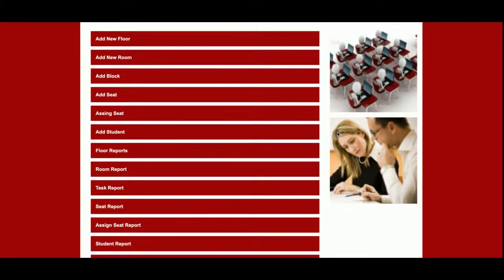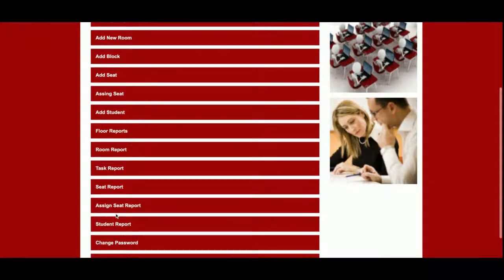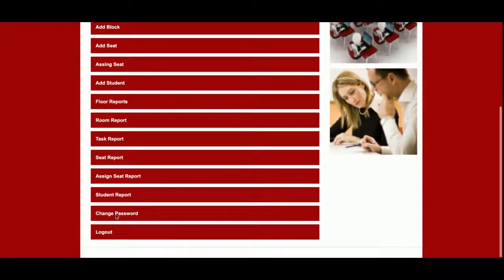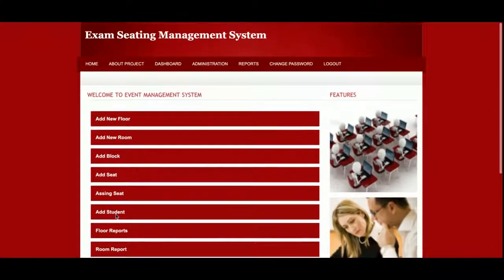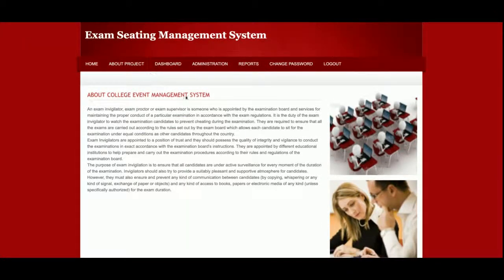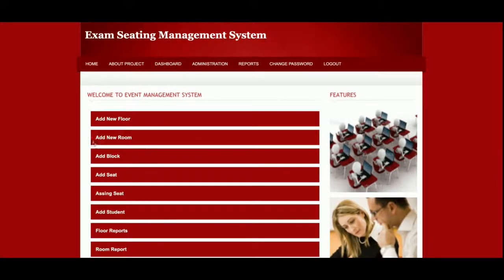From the admin dashboard, the admin can: add a new floor, add a new room, add a new block, add a seat, assign a seat, add students, view floor reports, room reports, block reports, seat reports, and assigned seat reports. The admin can also push updates and change the password. These menu options are also available in the navigation.